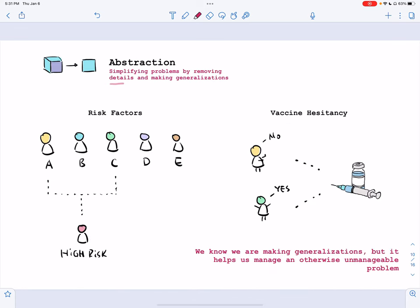And followed that, we can use abstraction to make some generalization about these groups. So we can generalize to say that group A and group C are more likely to be high-risk. And we can also make some generalization about vaccine hesitancy. So we can say group A are likely to be vaccine-hesitant, and group C are more likely to be open to vaccine. We know that we're making generalizations here, but it really helps us manage an otherwise unmanageable problem.